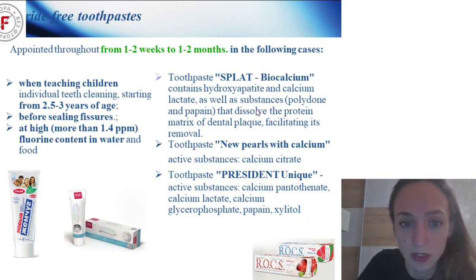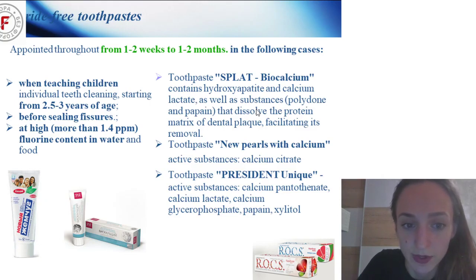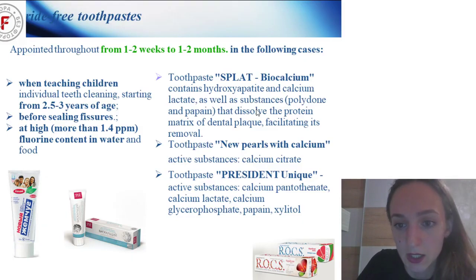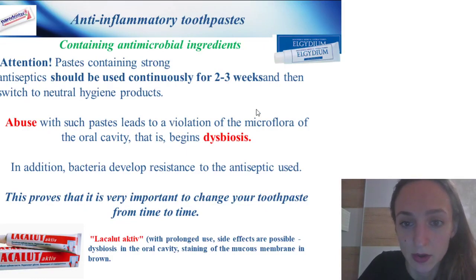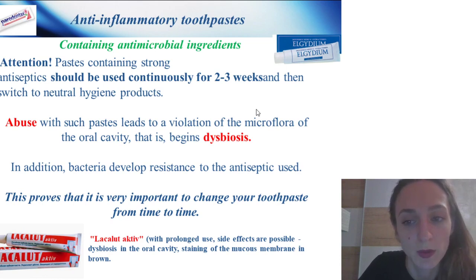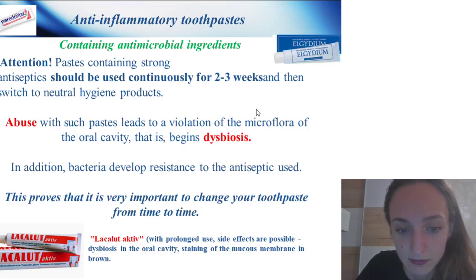Aminofluoride toothpastes form a highly stable protective calcium layer and start working after 20 seconds of application, allowing effective cleaning. They are appointed for periods from one to two weeks to one to two months. When teaching children individual teeth cleaning, start from 2.5–3 years of age. Before age 7, use toothpastes with fluoride content no more than 1.4 ppm. Examples: Splat Biocalcium, New Pearls with Calcium, and President Unique.